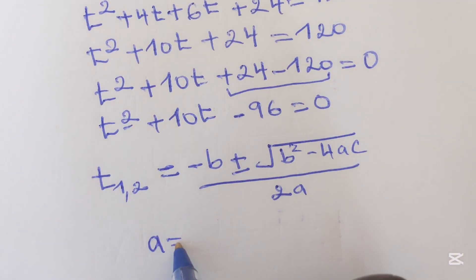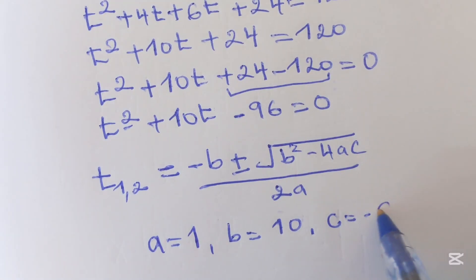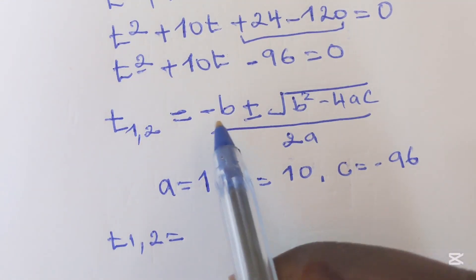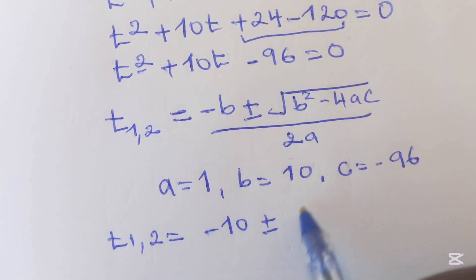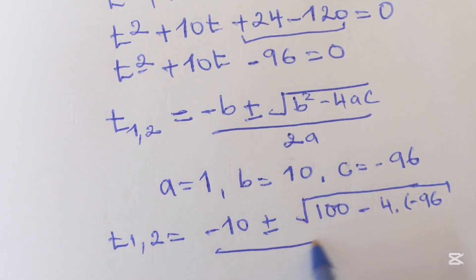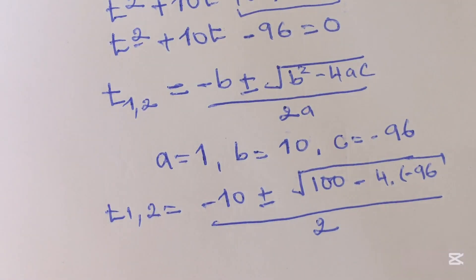Whereas, our a equals 1, b equals 10, and c equals negative 96. Then, t1 and 2 will be here negative 10 plus or minus square root of 10 squared is equal to 100 minus 4 times negative 96, over 2 times 1 is equal to 2.